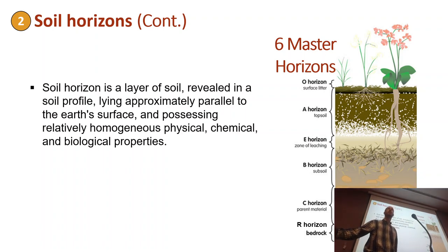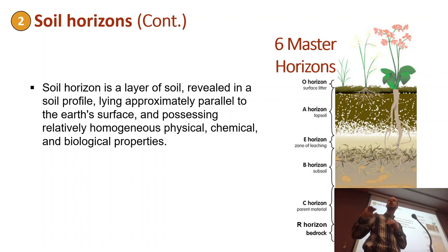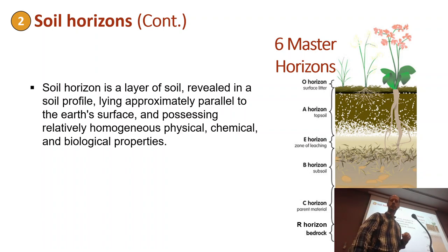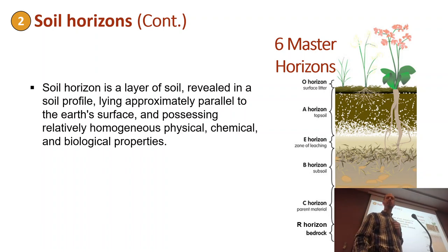A soil horizon is a layer of soil in the soil profile, lying approximately parallel to the Earth's surface and possessing relatively homogenous physical, chemical, and biological properties. If it looks about the same, you separate that as a horizon — a layer. If it changes, it's another horizon. For example, you might have a horizon where there is a presence of roots, and then a subsequent sub-layer of the same horizon where roots are less abundant. You can fragment as many times as you want; you just need to name and describe each layer.